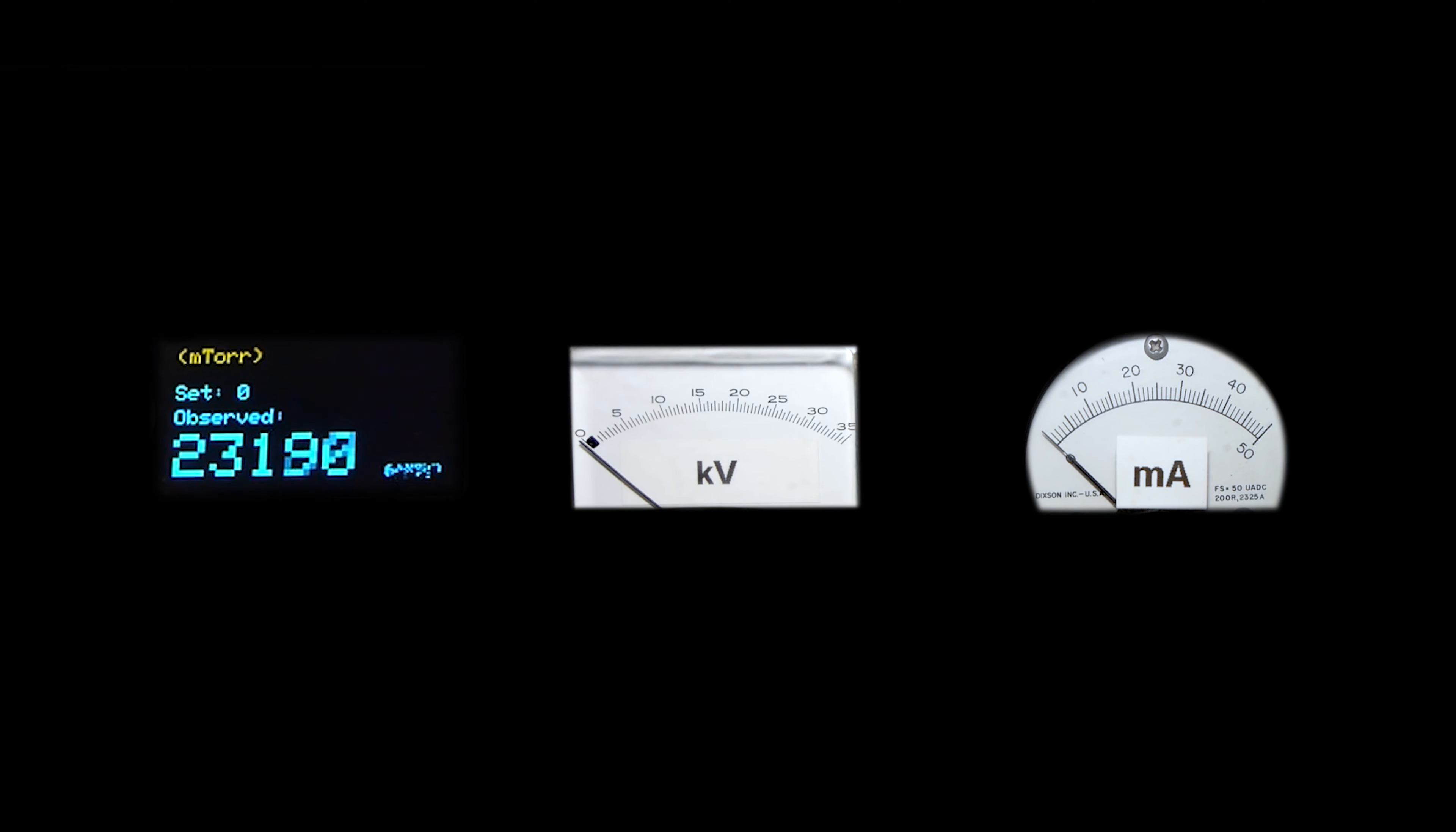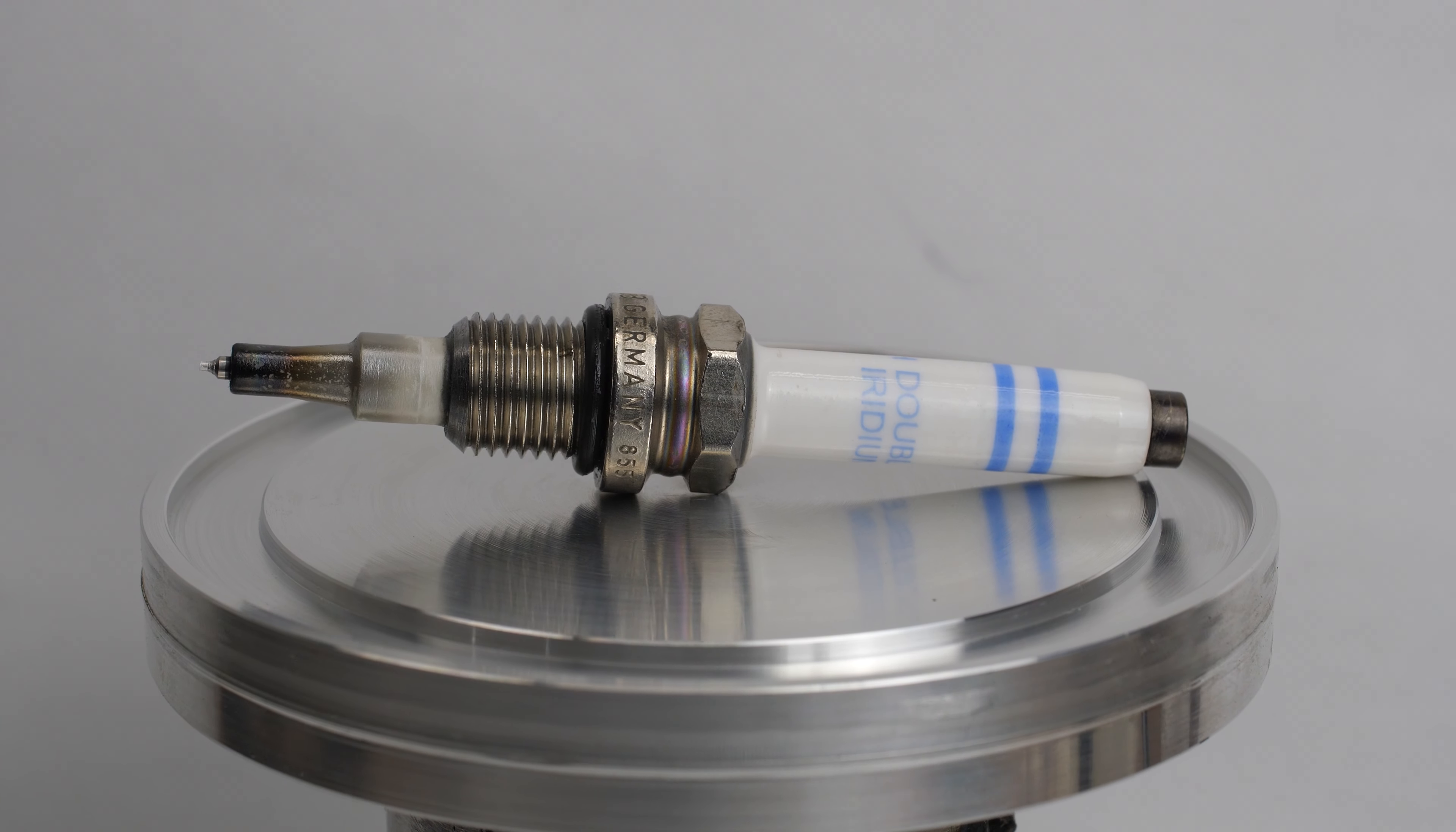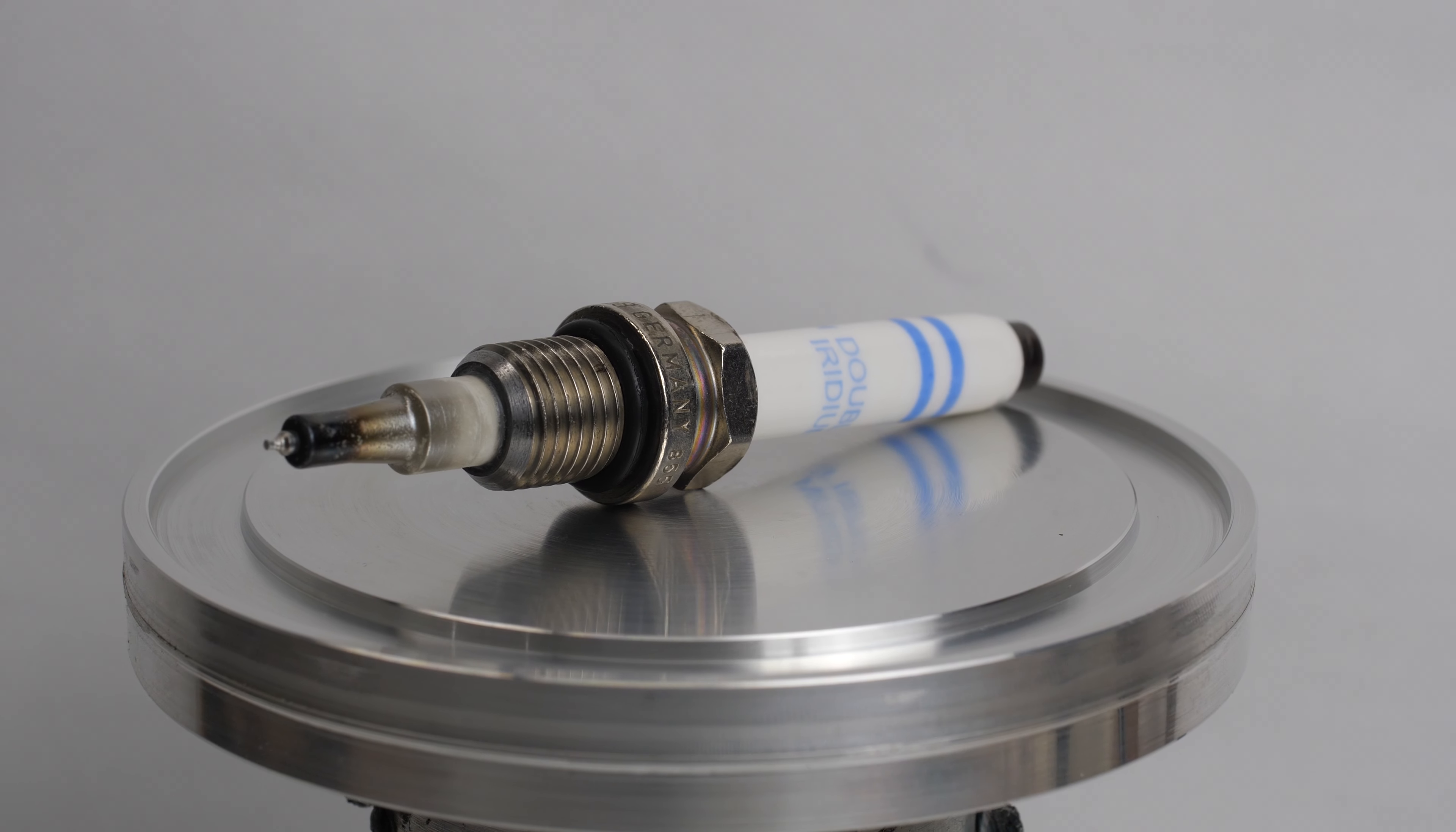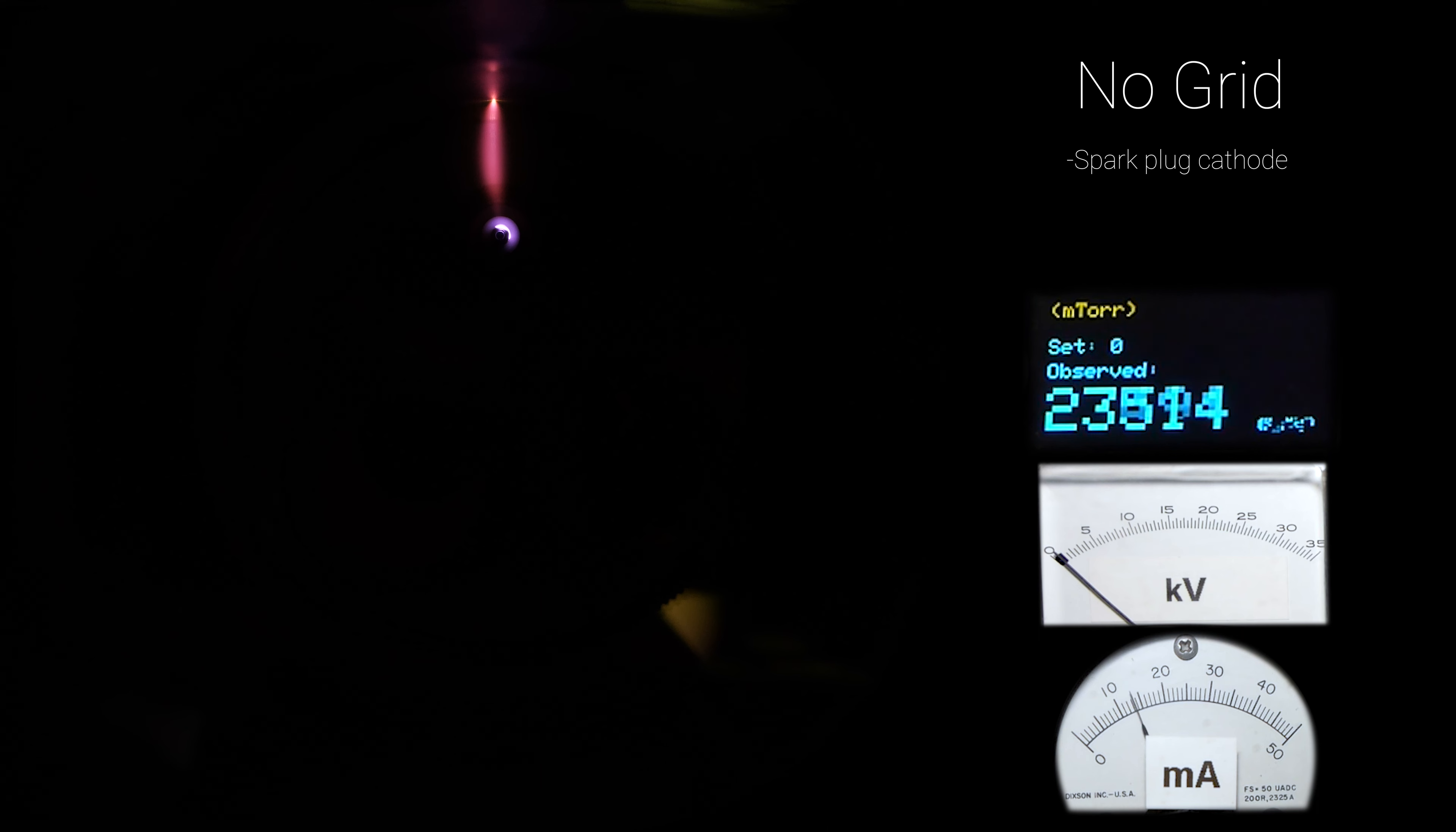To begin, I figured I'd show how the plasma behaves within the chamber without using any grid at all. So I replaced the grid holder feed-through with a modified spark plug to work as our cathode. This way, this first demonstration acts as our control to compare against the different ways the plasma will react to the various grid shapes we'll use later.